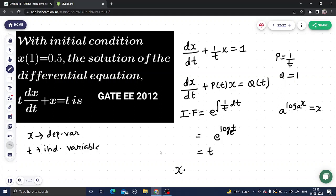times integrating factor equals integral of Q, which is 1, times integrating factor. So x times t equals integration of t, which is simply t squared by 2, and we get a constant c.